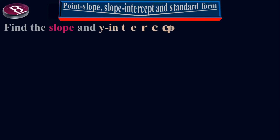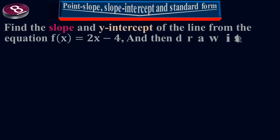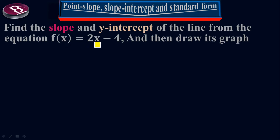Example 8. Find the slope and y-intercept of the line from the equation f of x equals 2x minus 4, and then draw its graph. We're going to find the slope-intercept form and the y-intercept of the line from this given equation f of x equals 2x minus 4.